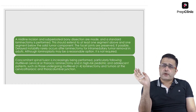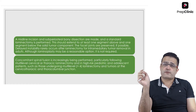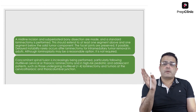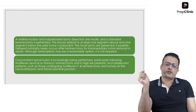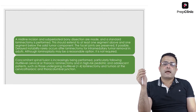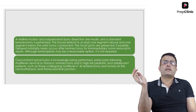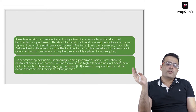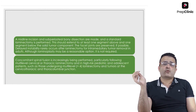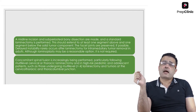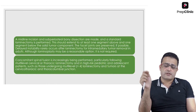A midline incision and subperiosteal bony dissection is performed, followed by a standard laminectomy at the appropriate levels, extending one level above and one level below the solid component of the tumor. Facet joints must be preserved as much as possible to avoid postoperative instability, and laminoplasty may be a reasonable option in selected patients. Concomitant spinal fusion is increasingly performed following multi-level cervical and thoracic laminectomy, particularly in high-risk pediatric patients undergoing more than four levels of laminectomy, and at cervicothoracic and thoracolumbar junctions.